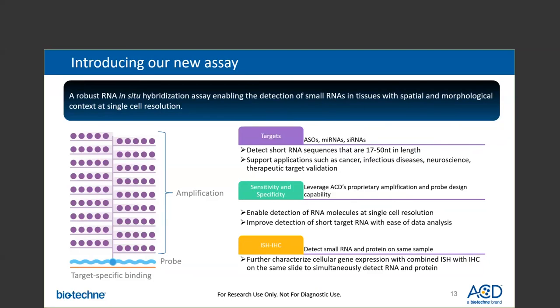To enable further insights into your research, this new assay is compatible with IHC, detecting small RNA and proteins simultaneously on the same slide. On the left diagram, this is an illustration of the new assay with the target probe binding to the target-specific binding site, and the target probe binding to a new amplification system to enable highly sensitive and specific detection of small RNAs.